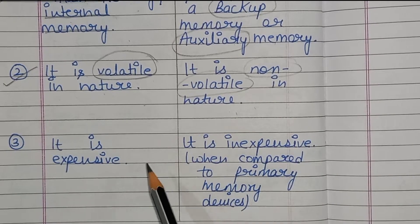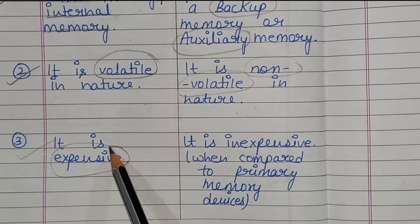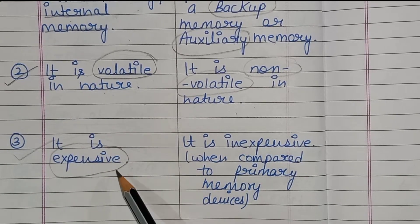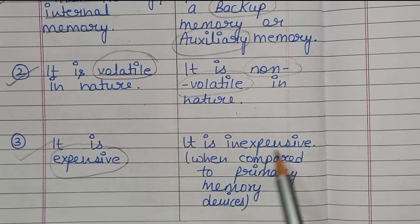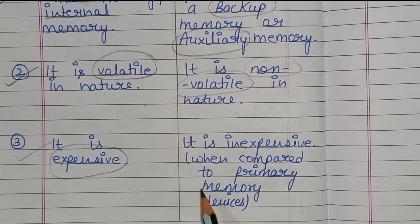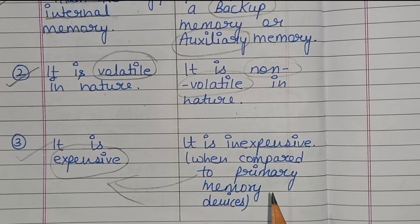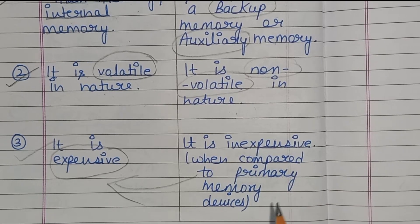The next difference concerns cost. Primary memory is expensive, and secondary memory is inexpensive — it is cheaper when compared to primary memory.